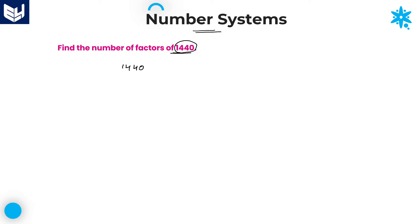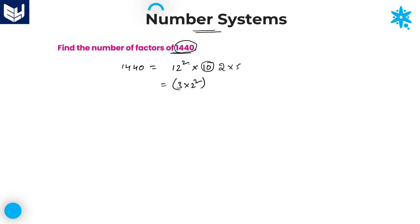I will write whatever equation comes to mind and just write down that expression, whether it is a prime number combination or not. Here, just by seeing the number 1440, I can write it as 12 squared into 10. As 0 is there at the end, that is the reason for the 10. And I can write this 10 as 2 into 5. Now, 2 is a prime number, 5 is a prime number, but 12 is not a prime number. I can write 12 as 3 into 4, which is nothing but 3 into 2 squared.